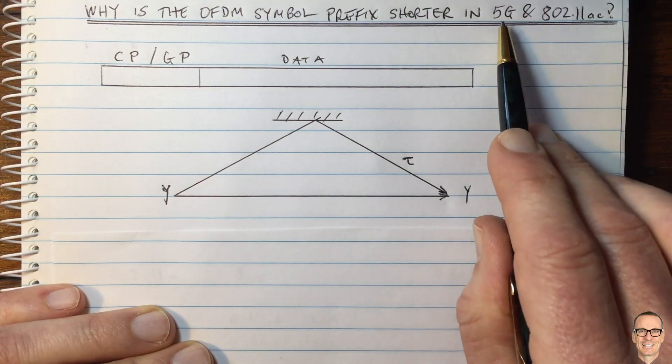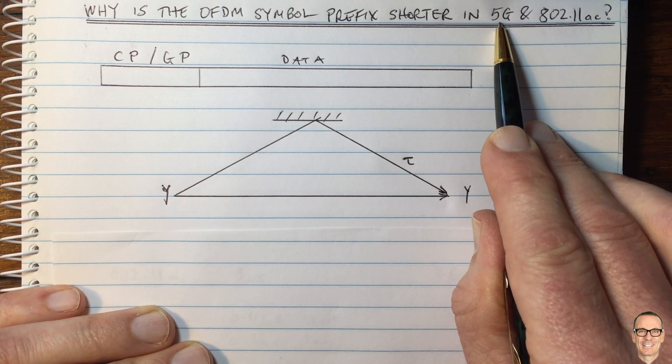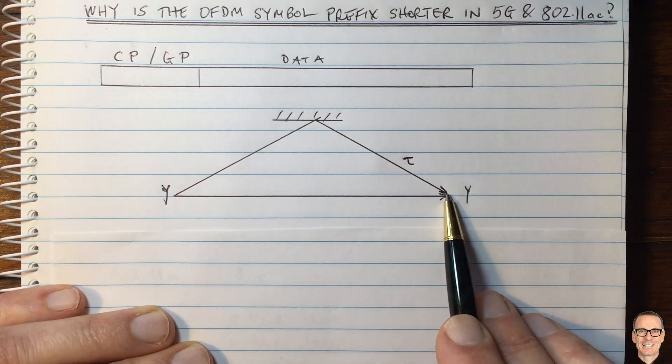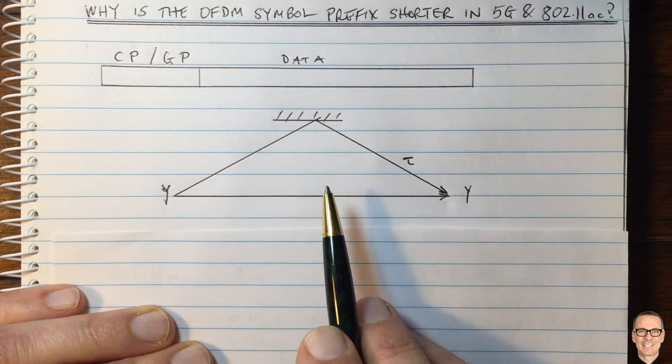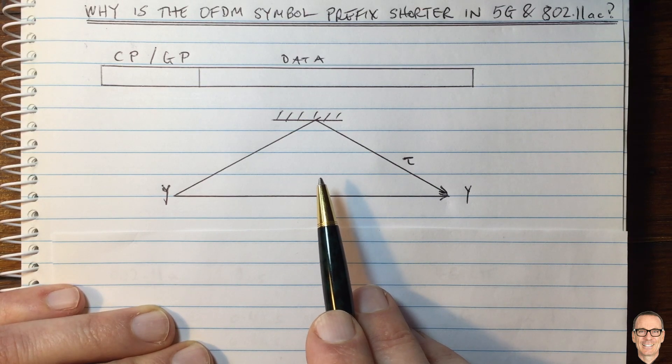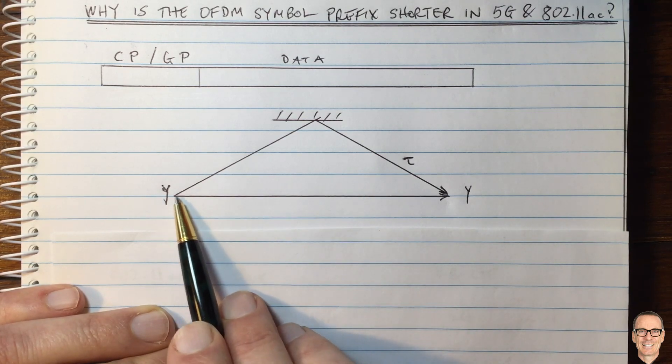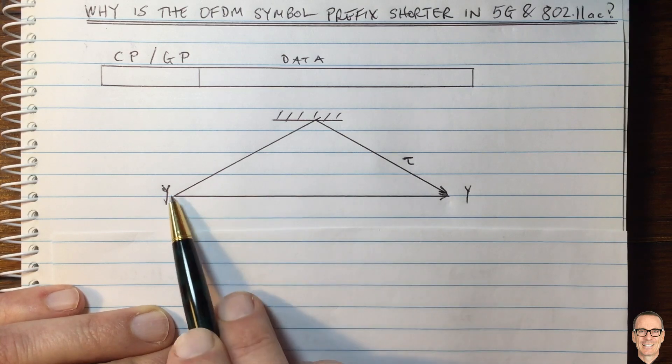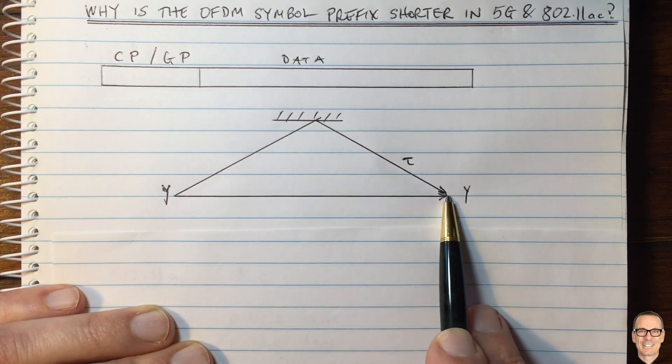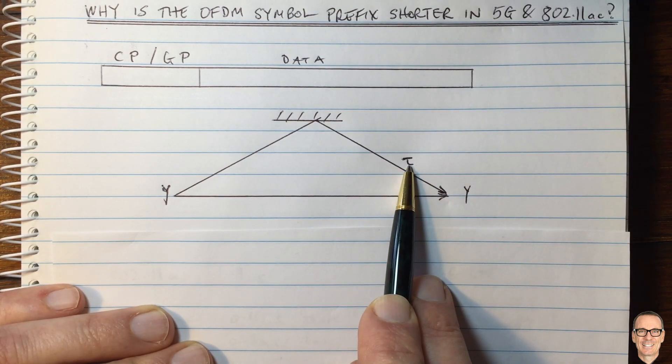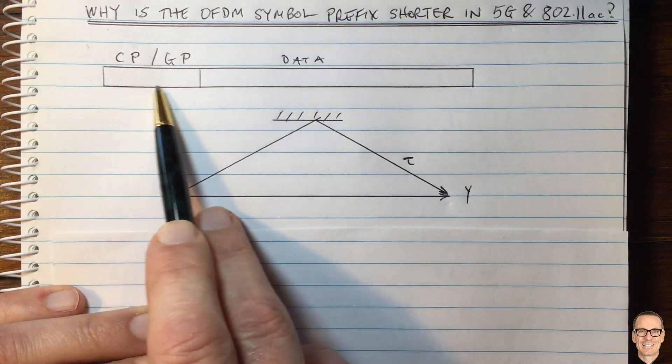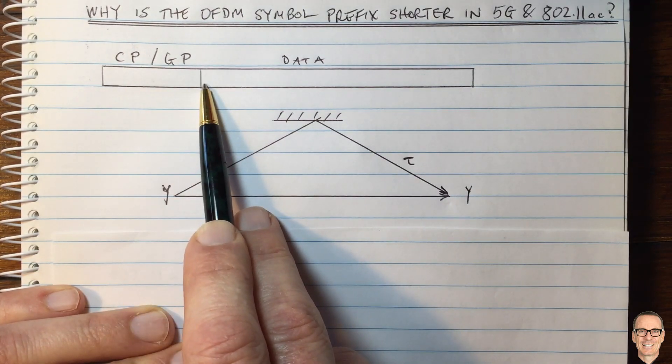5G mobile systems are introducing millimeter wave carrier frequencies. At millimeter wave there is more absorption from reflectors and the general propagation properties are not as favorable, so distances are shorter. There will be fewer paths arriving and making a substantial input to the receiver from long distances, which means the cyclic prefix can be shorter. That's one reason.